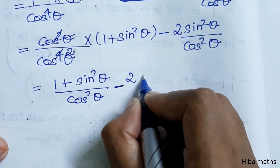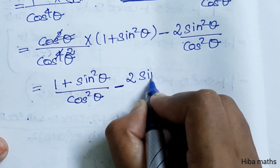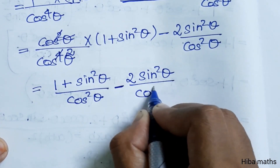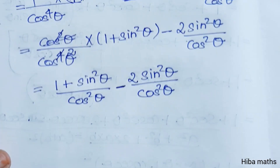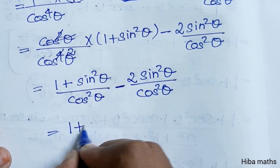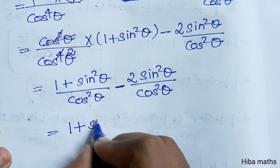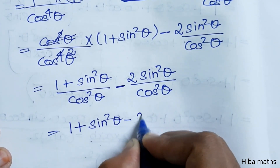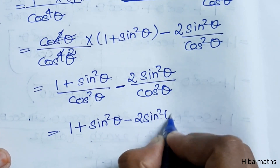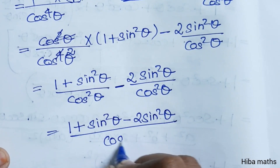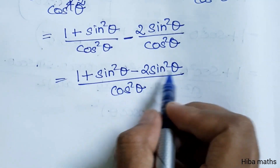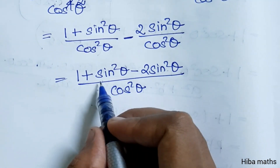Minus 2 into sin²θ divided by cos²θ. In the next line, the denominator gives us (1 plus sin²θ)(1 minus sin²θ) minus 2 into sin²θ divided by cos²θ. Now solve: both sin²θ terms combine.